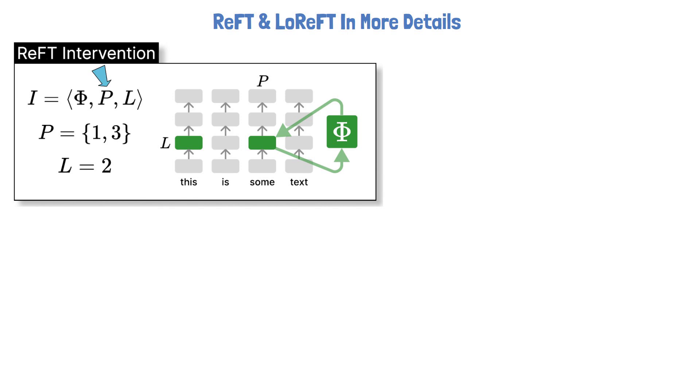The second component is P, which defines which tokens are handled as part of the intervention, meaning that the intervention will only edit the tokens defined in P, and will leave the other tokens unchanged. The last argument is L, which defines the layer which this intervention is in charge of. So in the example we have here, L is 2, and P includes 1 and 3, so we see the corresponding representations are colored with green.